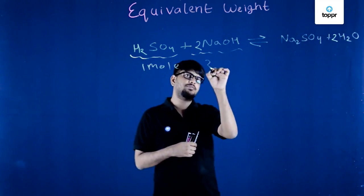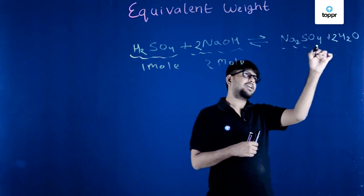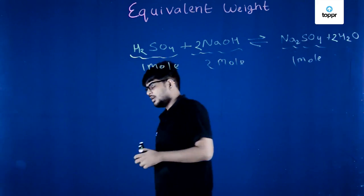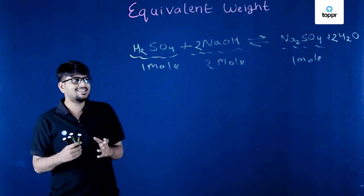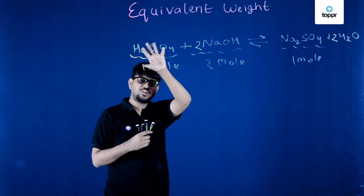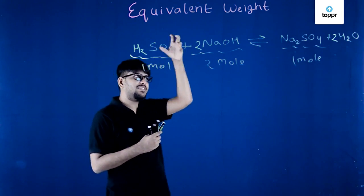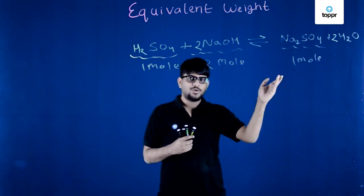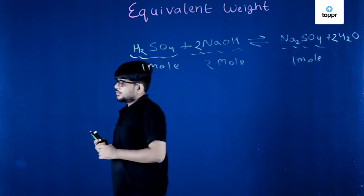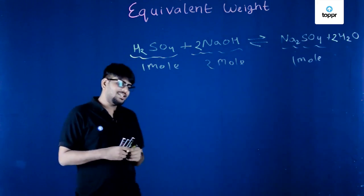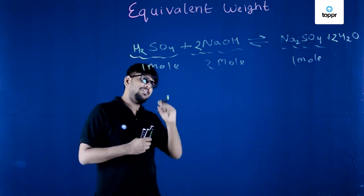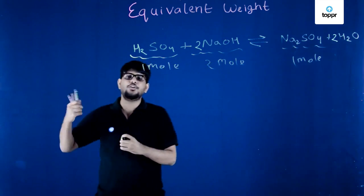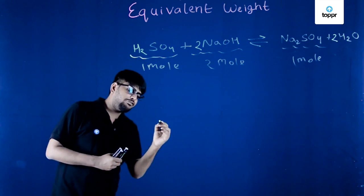With mole concept, we need one mole of H2SO4 and two moles of NaOH to get one mole of Na2SO4. Wouldn't it be nicer if we only needed one unit of each reactant to get one unit of product, rather than dealing with ratios like one, two, and one? That's where equivalent weight comes in — it's a magical unit.